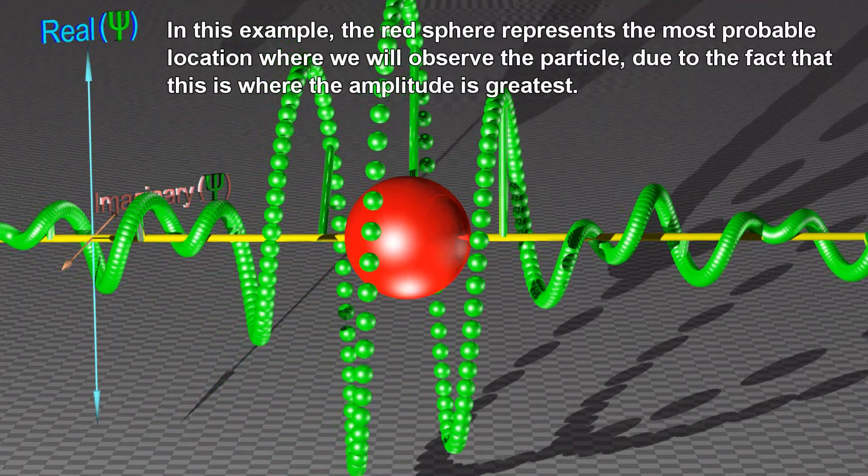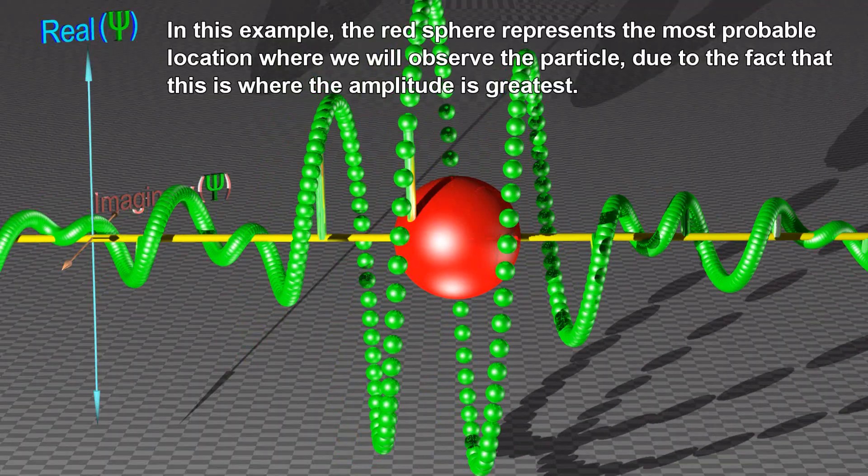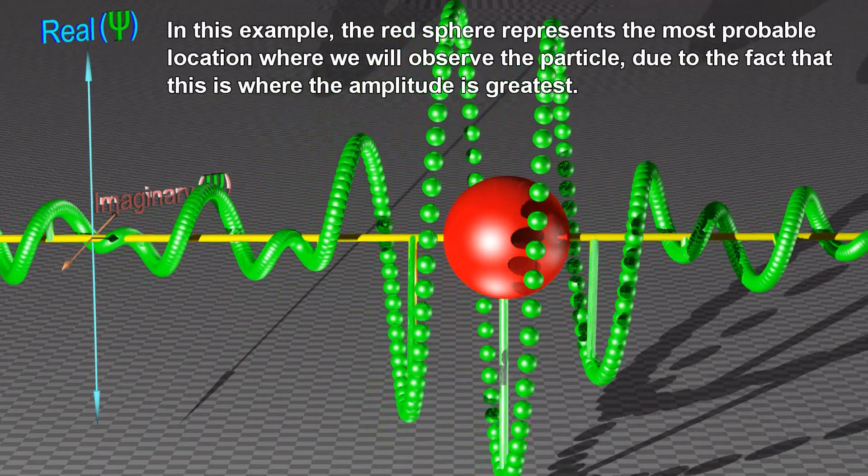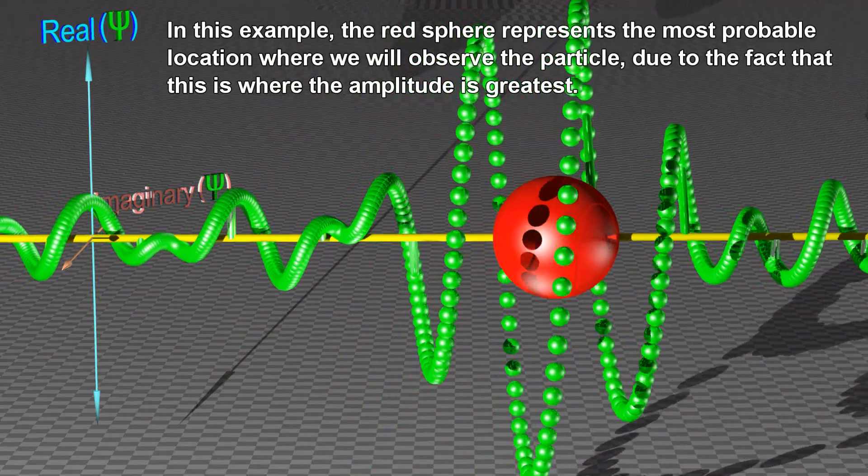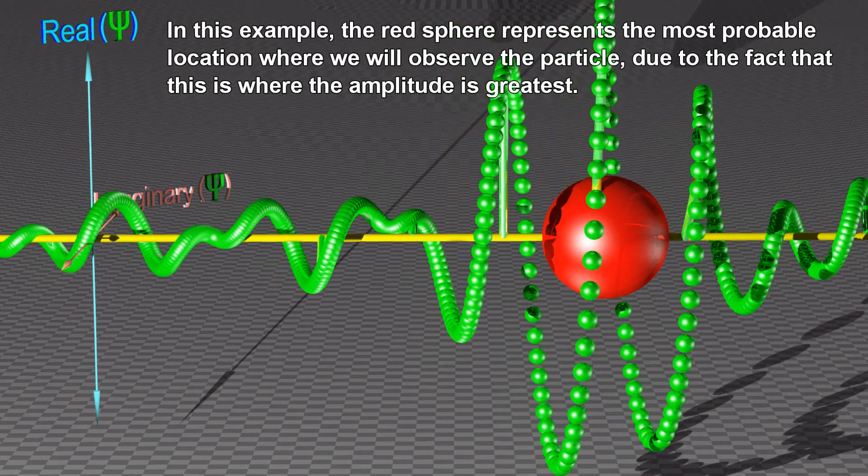In this example, the red sphere represents the most probable location where we will observe the particle, because this is where the amplitude is greatest.